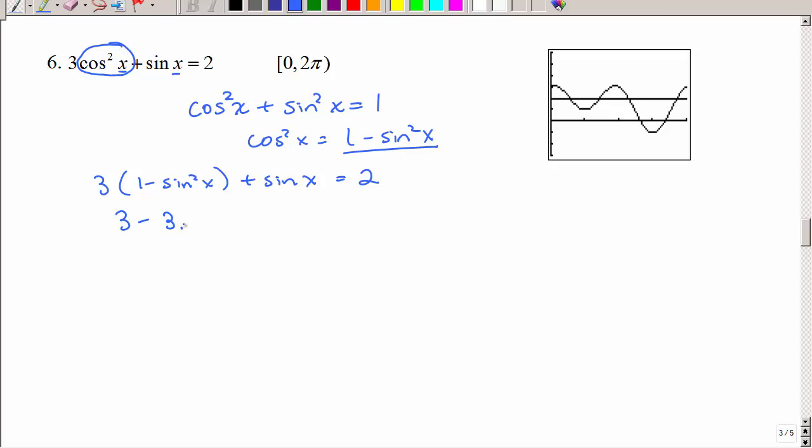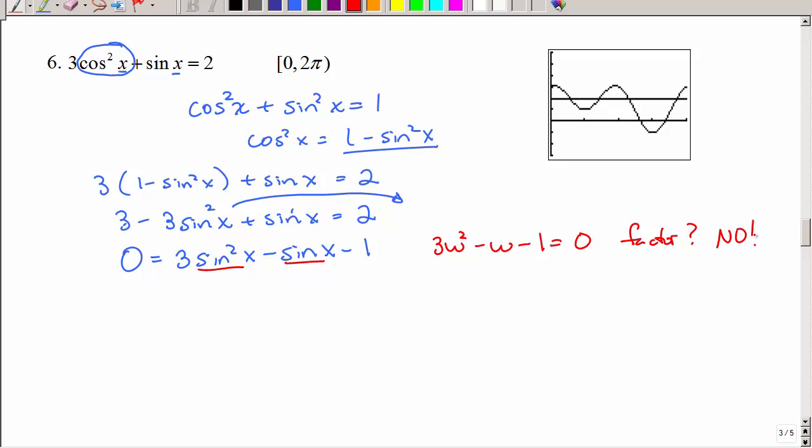I'm going to distribute. And I see that it's quadratic again, and this time I'm going to pull everything to the right hand side, because I like my squared term to be positive, that's just a personal preference. So if that goes over there, that's going to be negative, and if that goes over there, add it to the 2, it's minus 1. If I think about this being quadratic, maybe like 3w squared minus w minus 1 equals 0. Can I factor that? No.